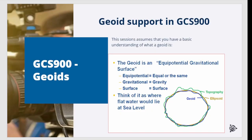I will start with a very short explanation of the term GeoEat. A GeoEat is a surface of equal gravitational forces, where the water does not flow in any direction. Basically, you can think of it as an extension of the sea through the continents.